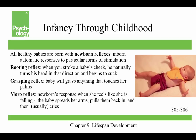All healthy babies are born with newborn reflexes — inborn automatic responses to particular forms of stimulation that usually disappear by four to five months old. The average newborn weighs about seven and a half pounds. There's a rooting reflex where stroking a baby's cheek causes them to turn their head and begin to suck. A grasping reflex means the baby grasps anything that touches their palms. The Moro reflex occurs when a newborn feels like it's falling — it spreads its arms, pulls them back in, and usually cries. Newborns also prefer human faces, their mother's voice, and can distinguish their mother's smell.